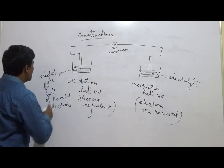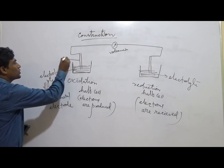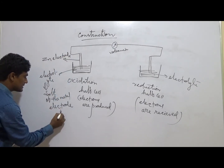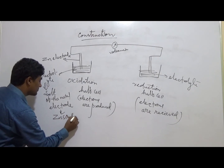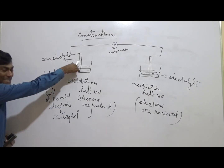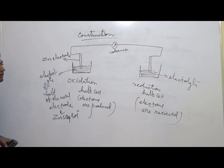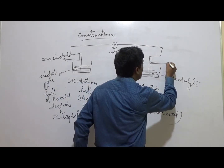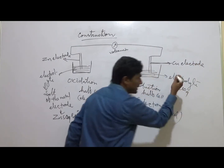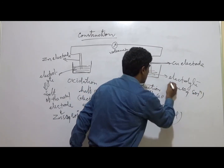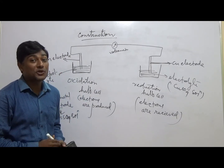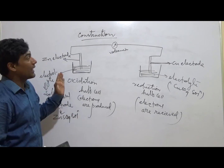For example, in the oxidation half cell, a zinc electrode is dipped into a zinc sulfate solution. In the reduction half cell, a copper electrode is dipped into a copper sulfate solution. This is the fundamental principle of how electrons flow through a wire to produce electricity.